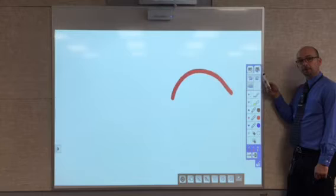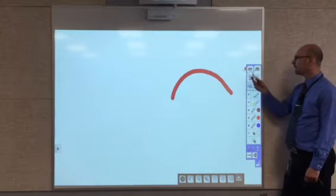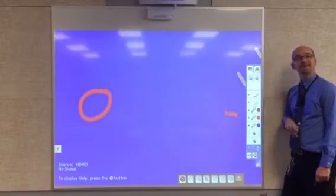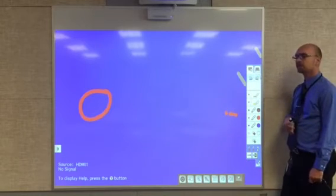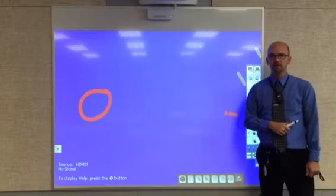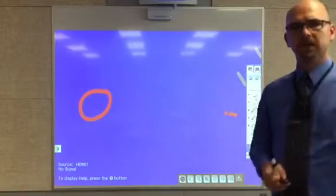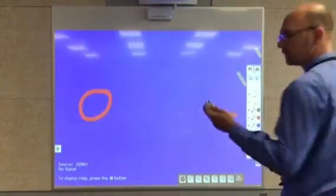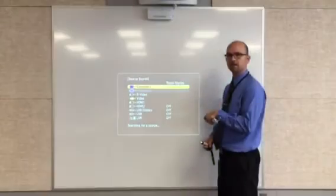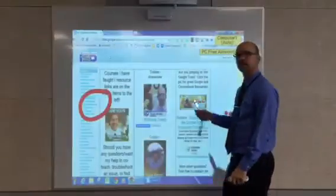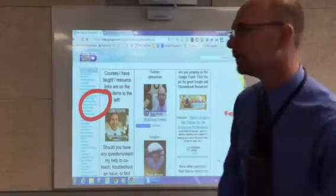I'm in the whiteboard mode right now, I could however switch to the PC annotation mode and when I click on the PC annotation mode it should be showing my computer screen right now. If it gives you issues you could click on the source search of your projector remote and then I've had good luck with it finding the computer like it's supposed to.